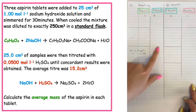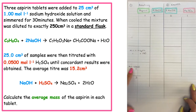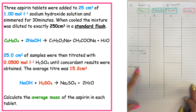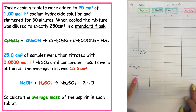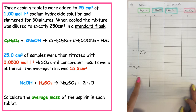The question wants us to calculate the average mass of aspirin found in the tablets. To do that, we need to work out the mass of aspirin that reacted over the number of tablets, which in this question is given as three.